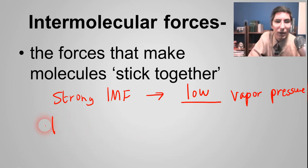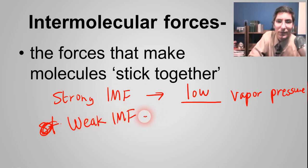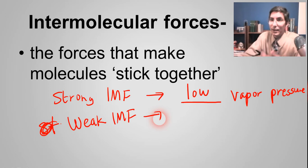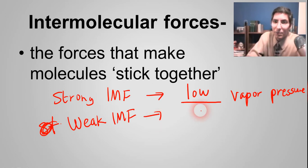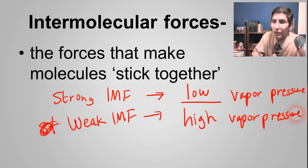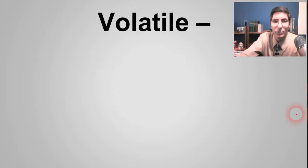If something has weak intermolecular forces, the molecules don't stick together very well. They're able to fly off easily and become a gas or vapor very quickly, so you're going to have a lot of vapor — a high vapor pressure. There's a clear relationship: the stronger the intermolecular forces, the lower the vapor pressure of the substance.